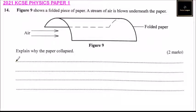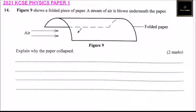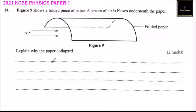Question number 14. Figure 9 shows a folded piece of paper. A stream of air is blown underneath the paper. So we have the paper here, we have air being blown. The paper is folded. Explain why the paper collapses.